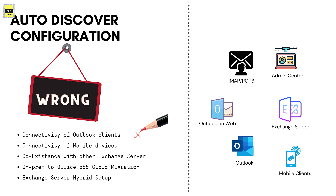Auto Discover configuration will also be affected when you are building a new Exchange server, bringing coexistence between versions like 2013 and 2016, migrating from on-premises to cloud, or when you have an Exchange hybrid setup with some users on-premises and some in Office 365. In all these cases, Auto Discover is very important. If Auto Discover is wrong, you may end up with issues from Outlook clients, mobile devices, coexistence configurations, or hybrid setups.